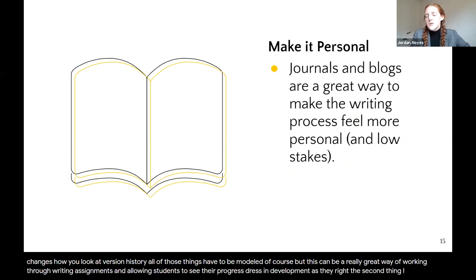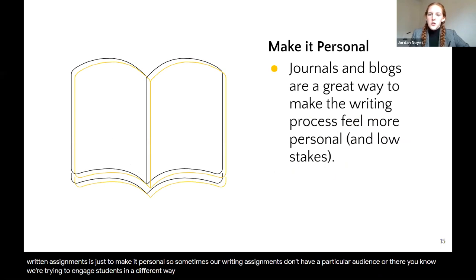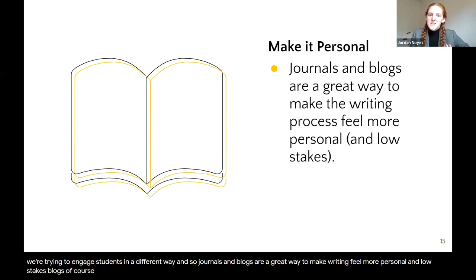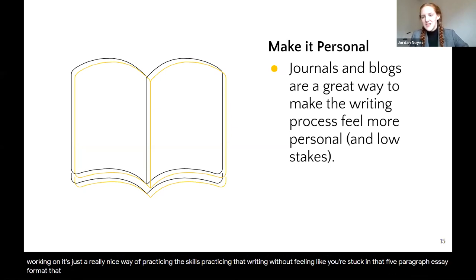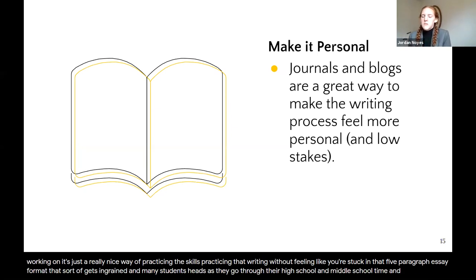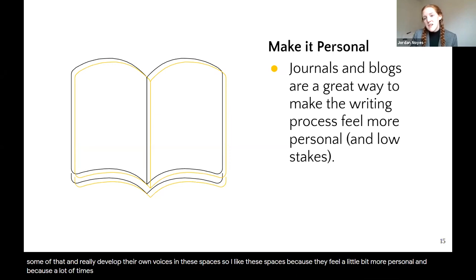The second thing for written assignments is to make it personal. Journals and blogs are a great way to make writing feel more personal and low-stakes. A private blog is a really nice way of practicing writing skills without feeling stuck in the five-paragraph essay format ingrained in students through high school. These spaces help students develop their own voices and, because they're outside the LMS, are owned and retained by students themselves.